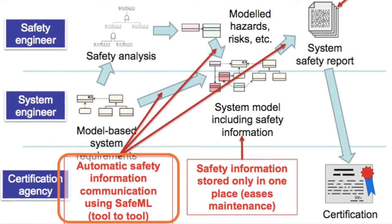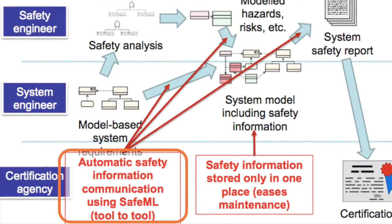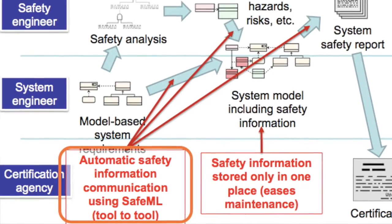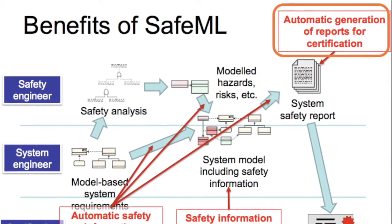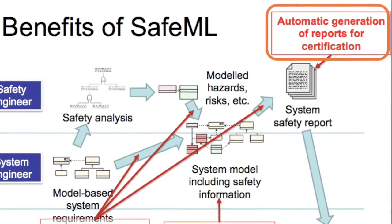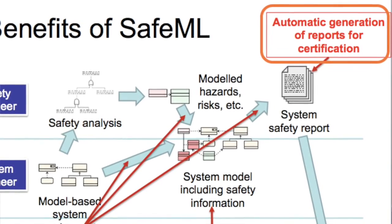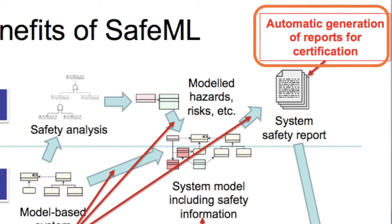For example, we can perform an impact analysis to determine what parts of our system are impacted by a change in the known hazards. Or we can use it to generate the very large reports that need to be delivered to certification agencies, reducing the time and manual work required in managing safety information. We can even change how we display this information to suit the task. When you have set textual reports and tabular reports of safety information, it is very hard to change how that's formatted to suit how you're using it.